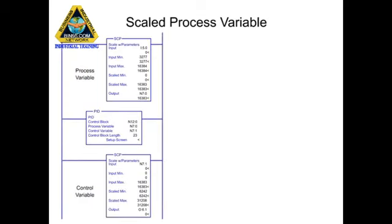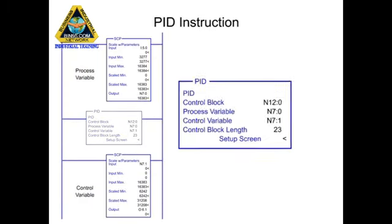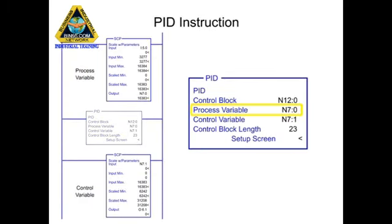In the PID instruction, the process variable parameter is programmed as an integer file, which is the scaled value from the SCP instruction. The control variable parameter is programmed as an integer, which is the memory address for the output value.